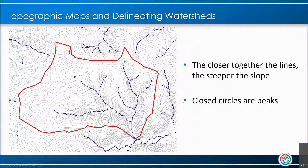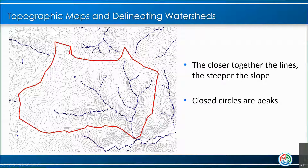This is an exercise that appears usually each year on the Envirothon test — delineating or outlining watersheds on a topographic map. Watersheds are defined by topography. The closer together the lines are, the steeper the slope. These closed circles are peaks of hills or mountains, and basically when you connect all the different peaks and take into account the steep slopes, you're able to outline the watershed. There are some resources online that you can practice on, and this does usually appear on the exam.